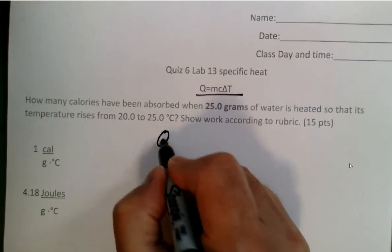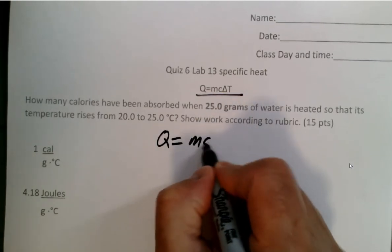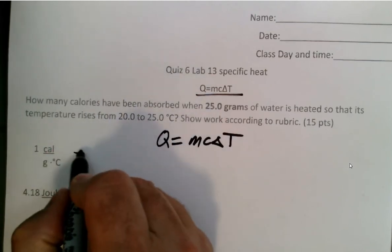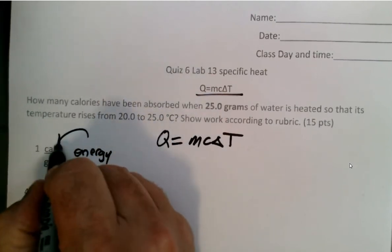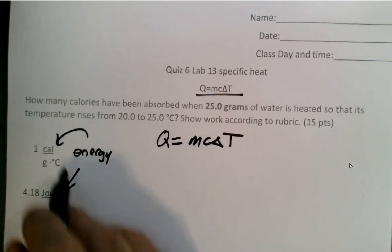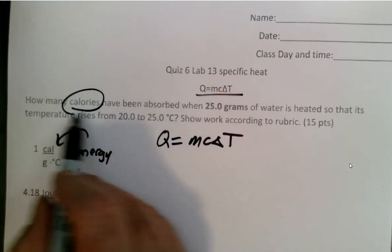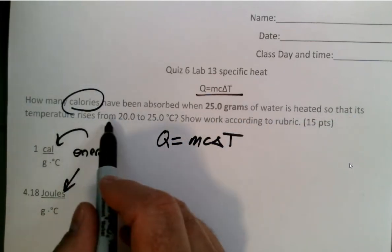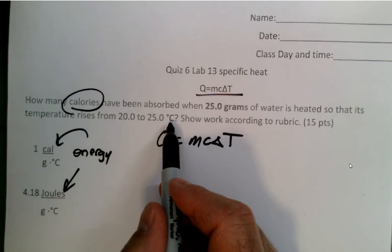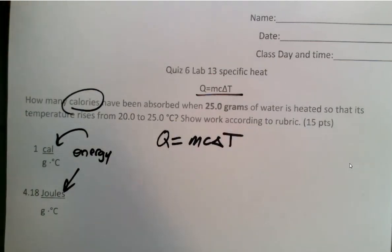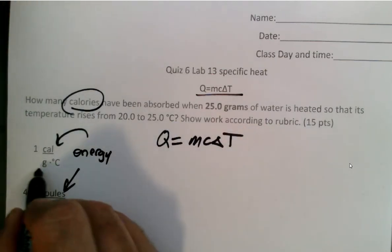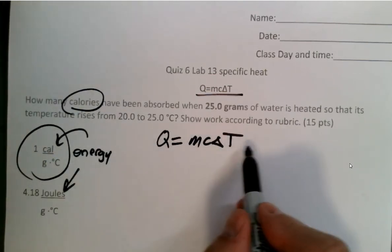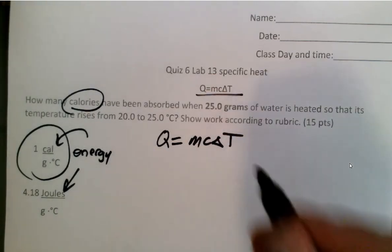Specific heat - the formula that we're going to use is Q is equal to mcΔT. Well, what is Q? That is energy and it can be in calories and it can be in joules. The question says how many calories have been absorbed when 25 grams of water is heated so that its temperature rises from 20 to 25 degrees Celsius. Show your work. So it would behoove us to use the specific heat that has calories in it so that it will easily cancel when we work the problem - plug it, chug it, and crank it.